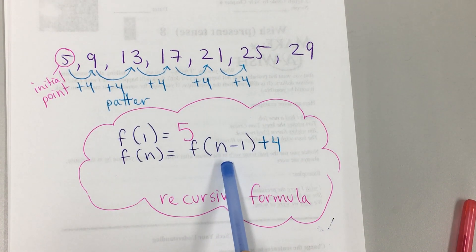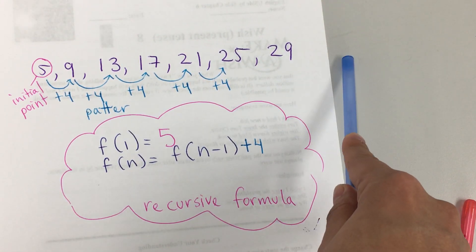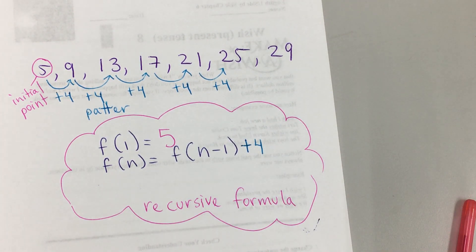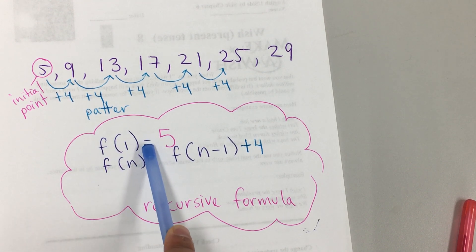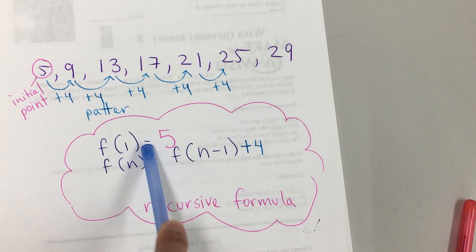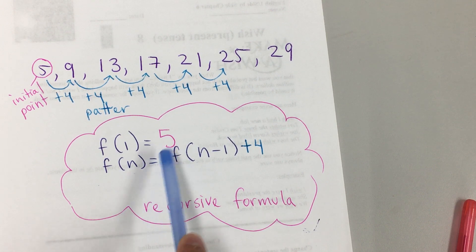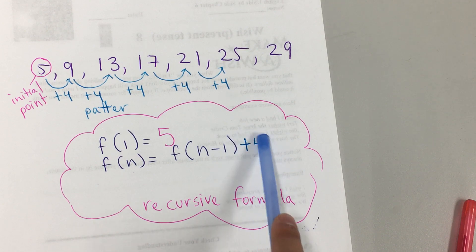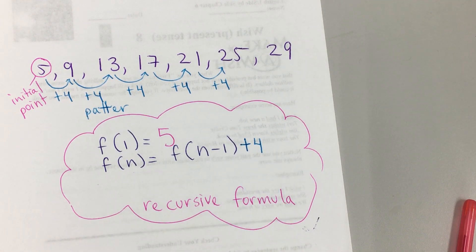With this formula, in the next lesson you will be able to find the next term, the next term, the next term — but we'll get to that tomorrow. Again, if they give me this sequence, I always put f of 1 equals — that's always part of my recursive formula — and I put the first number. For the second part, it's f of n equals f of n minus 1, and this is what's going to be changing for different sequences. You include the pattern in here. Let's look at another one.